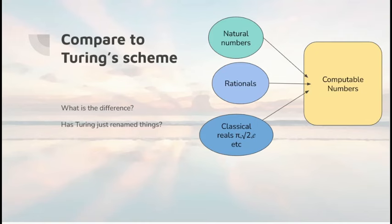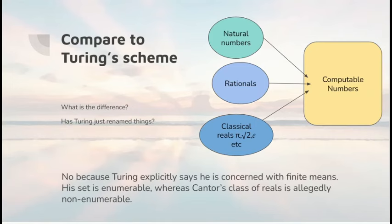And how does this compare to Turing's scheme? Well, it looks pretty similar. Natural numbers, rationals, the classical reals all went into the computable reals. The difference is that Turing is saying he's explicitly concerned with numbers computable by finite means. And that his set is enumerable, whereas Cantor claimed that his set was non-enumerable.